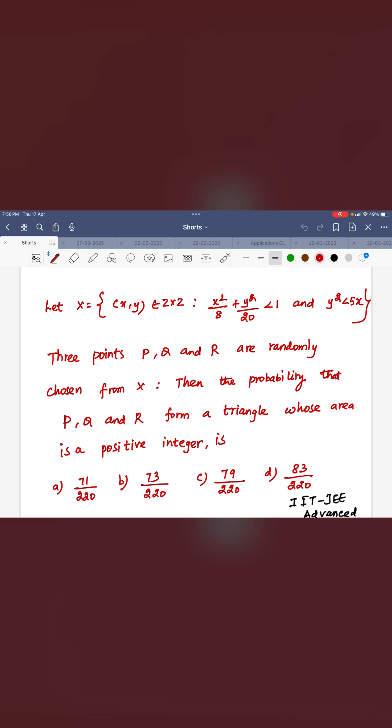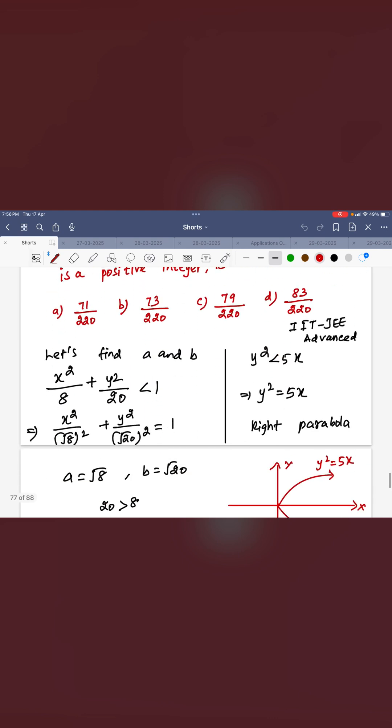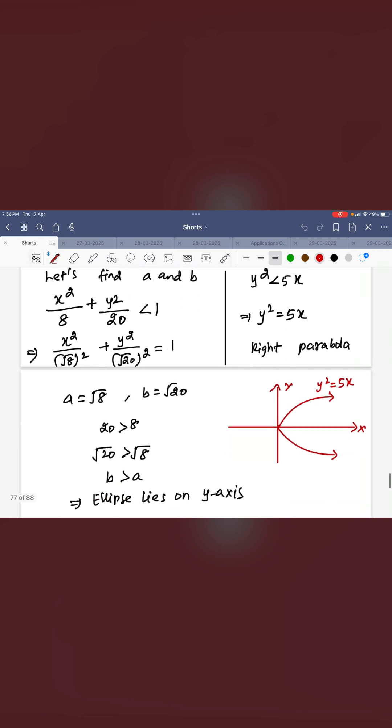You can see how many triangles are possible you have to collect first, that is the total possible outcomes. Second one is, among all the triangles, how many triangles have positive integer area? That is a favorable case. Now for that, you can see the ellipse and parabola diagram.